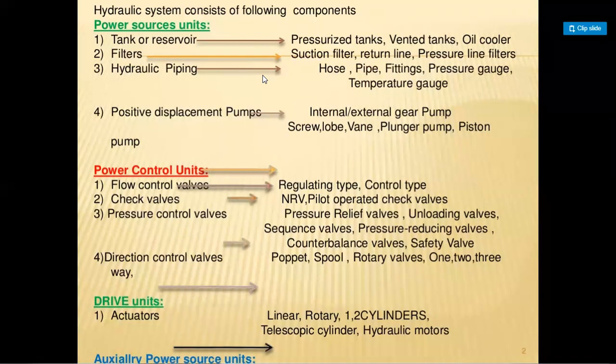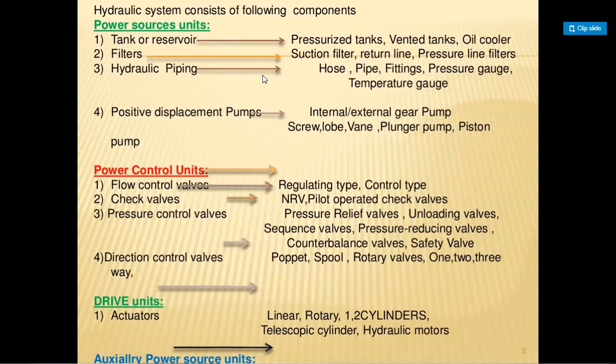The next category is power control units. The flow control valve controls the flow of fluid in the pipeline system. If the pressure is very high it should be varied — it can be regulating type or control type. These are the two types of flow control valves. There are also check valves, NRV, pilot operated check valves, pressure relief valves, and unloading valves — these are the different pressure control valves.